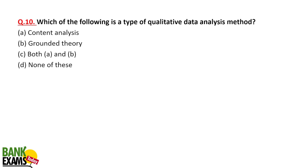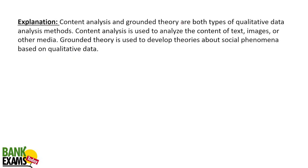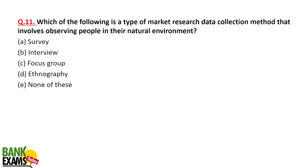Which of the following is a type of qualitative data analysis method? Content analysis and grounded theory are both qualitative data analysis methods. Content analysis is used to analyze content, images, or other media. Grounded theory is used to develop theories about social phenomena based on qualitative data. A related question: which data collection method involves observing people in their natural environment? That is ethnography — you are observing a community or group of people in their natural environment.